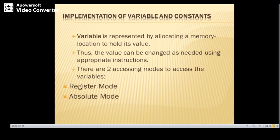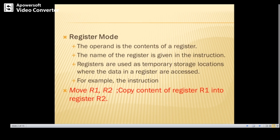Next, we'll look at the implementation of variables and constants. A variable is represented by allocating a memory location to hold its value, and the value can be changed as needed using appropriate instructions. There are two accessing modes to access variables: register mode and absolute mode.